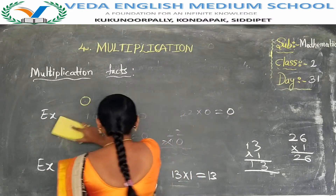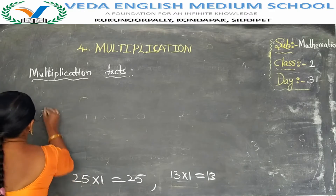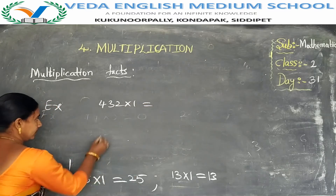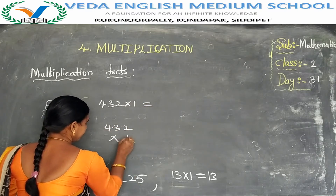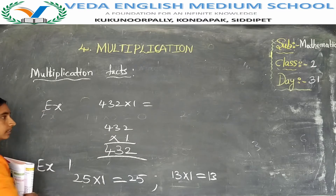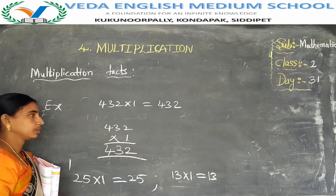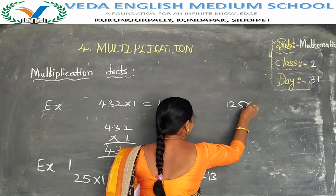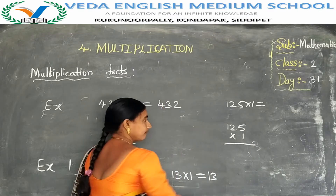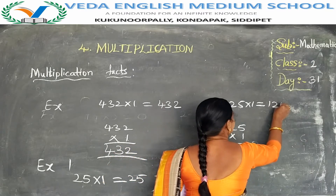Next example: 432 ones are 432. See: 432 into 1 — 1 two is 2, 1 three is 3, 1 four is 4 — so 432 ones are 432. One more: 125 into 1 — 1 five is 5, 1 two is 2, 1 one is 1 — so 125 ones are 125.